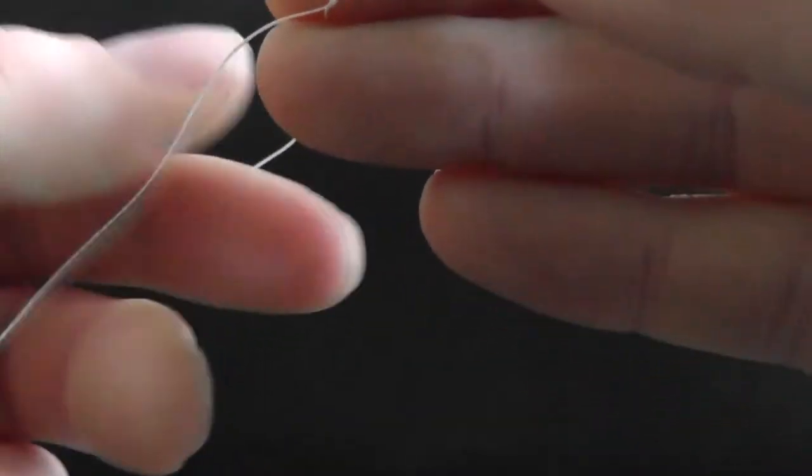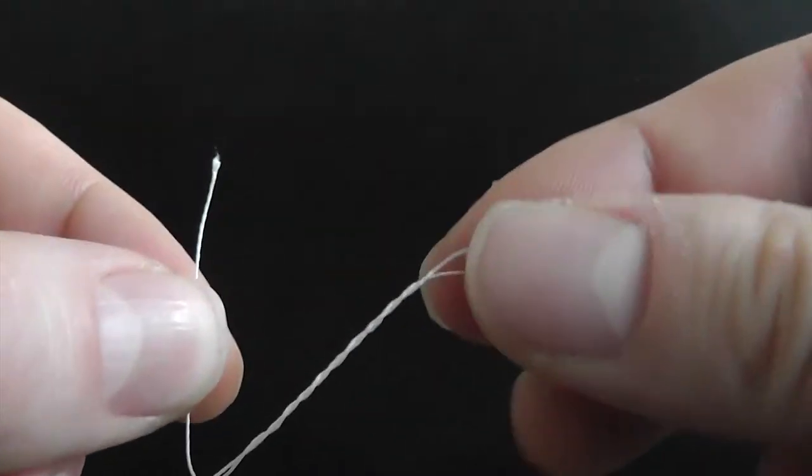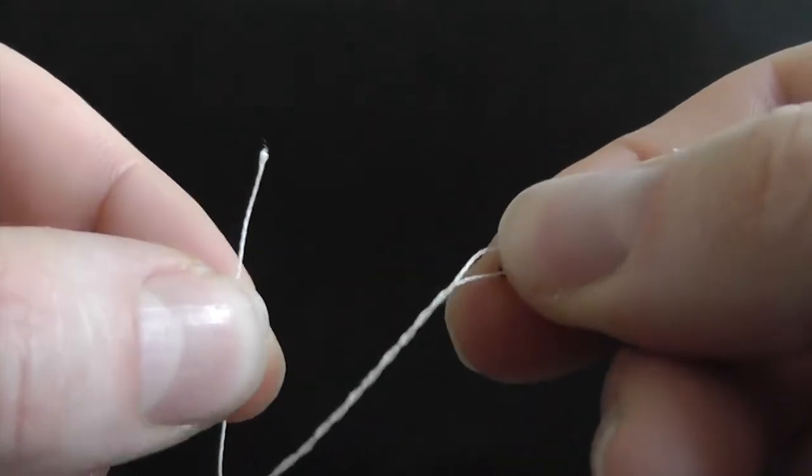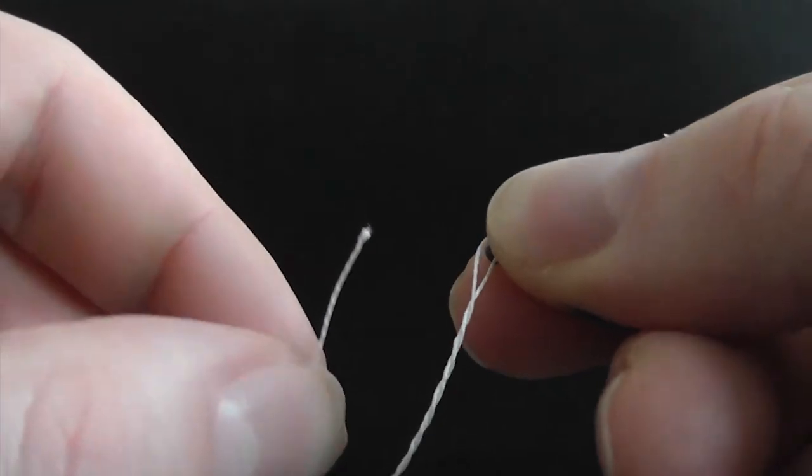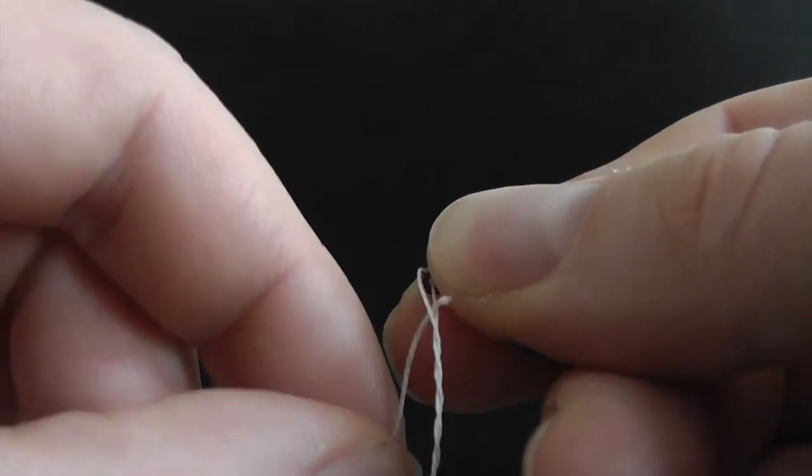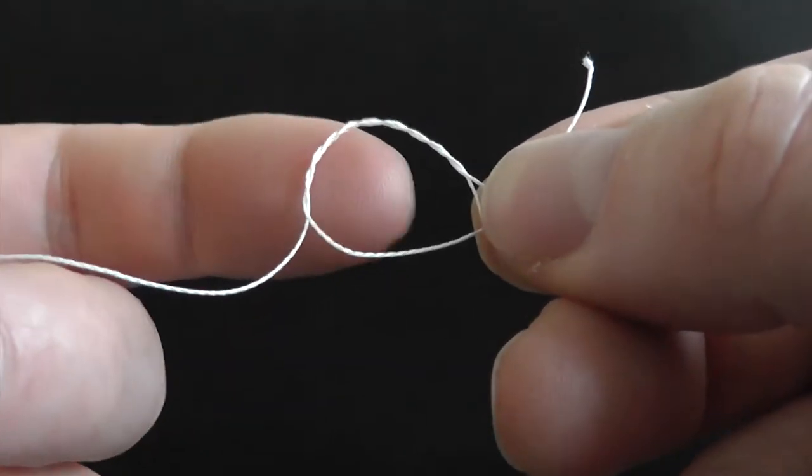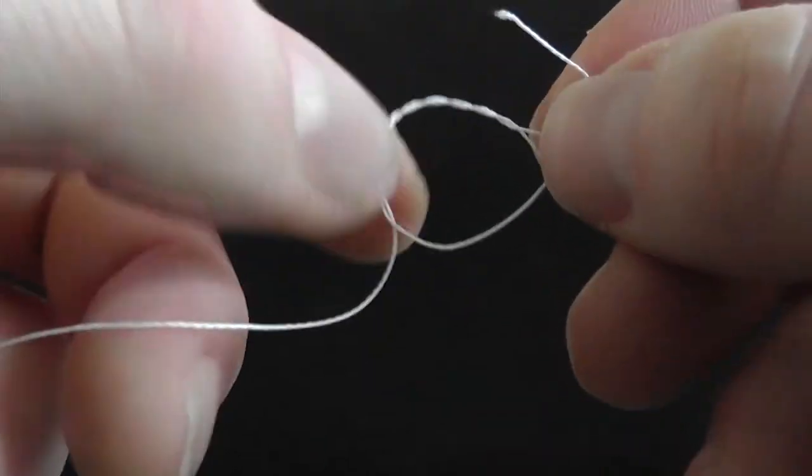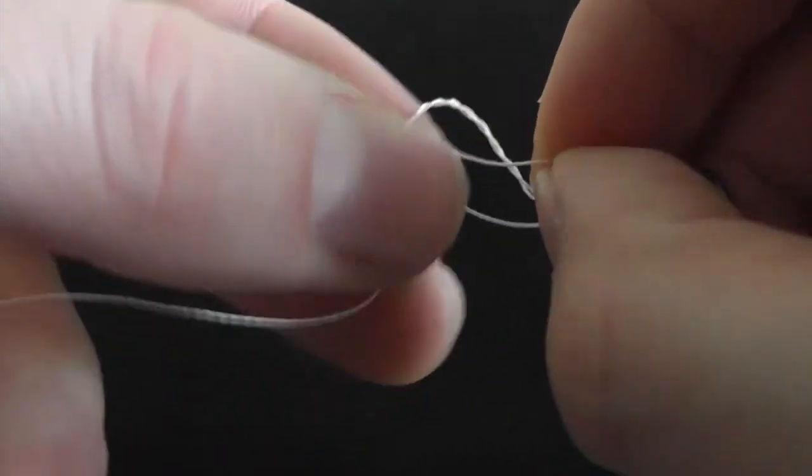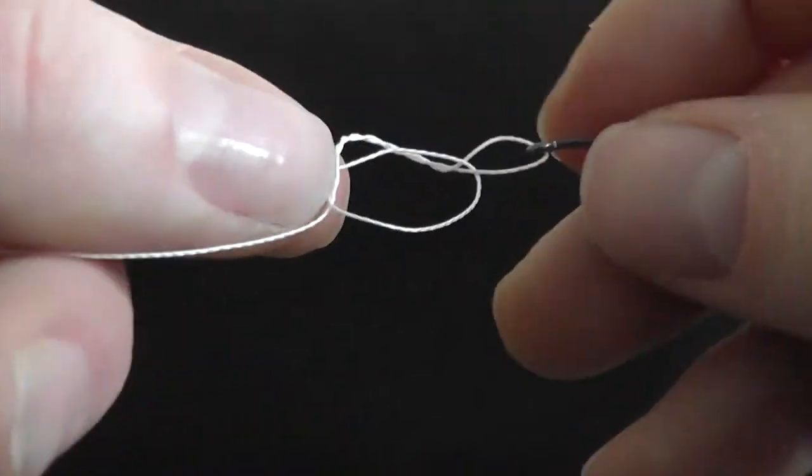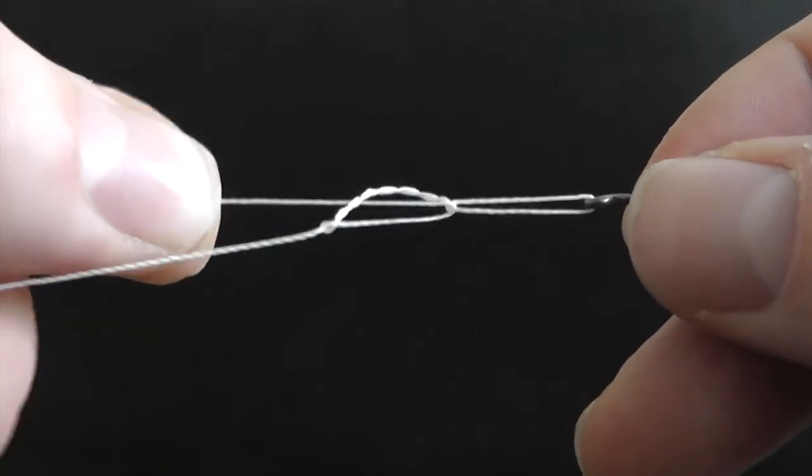And then on the sixth turn, we take the tag end through the little loop that we've made by the eye of the hook. We pass that through there, and when we do that you'll see we've created another loop here. Then take that tag end through that loop.